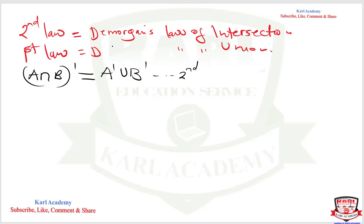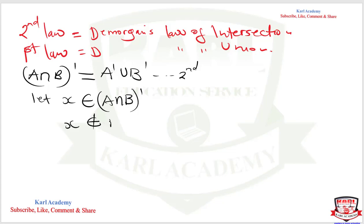Now let x belong to the complement of A intersection B. This means that x is not a member of A intersection B. The first part is that we are seeing that x is an element that belongs to the complement of that intersection of A and B.